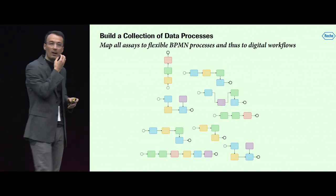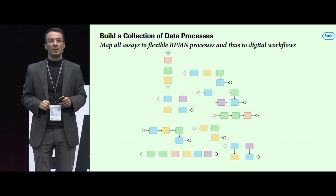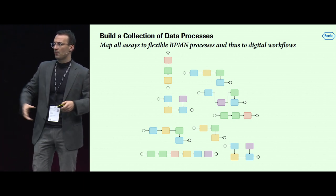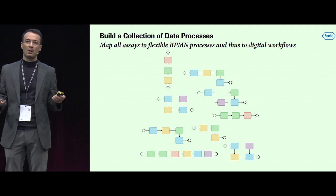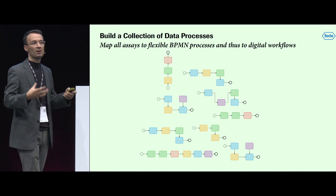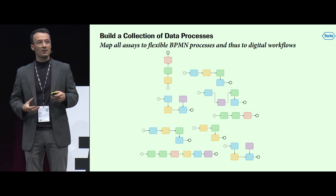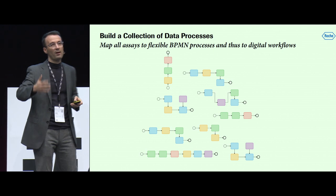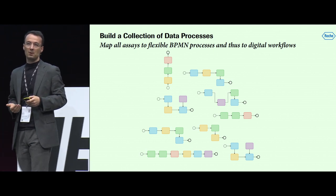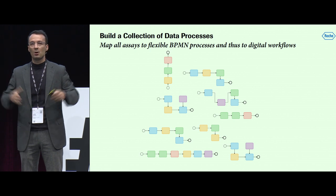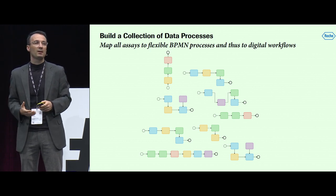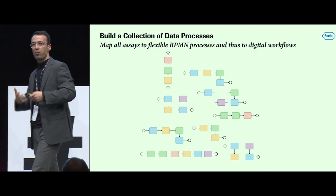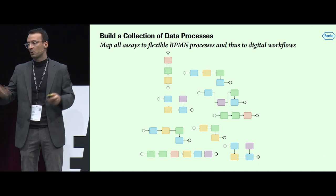Our vision is to map all our assays using business process modeling, ending up with a collection of processes where, for the first time in the organization, we can really look inside the research activity and see what is running, how often it runs, whether it has redundancies to other processes. This way we can move into the next phase of transforming how we do research by looking at these processes holistically and optimizing the activity behind them. This is our goal.